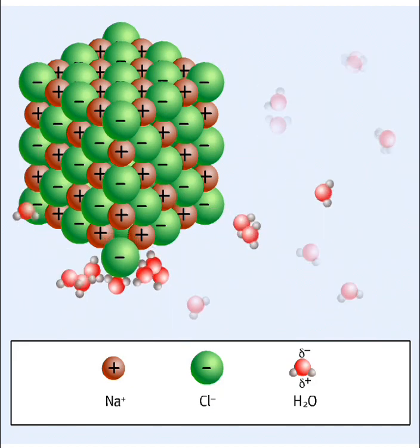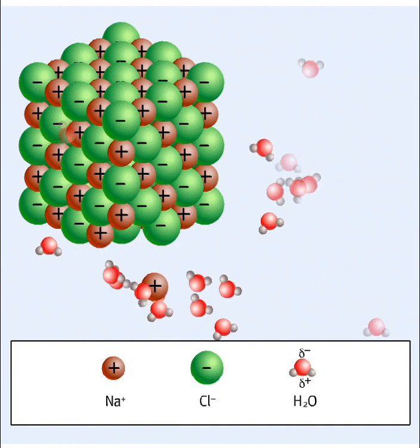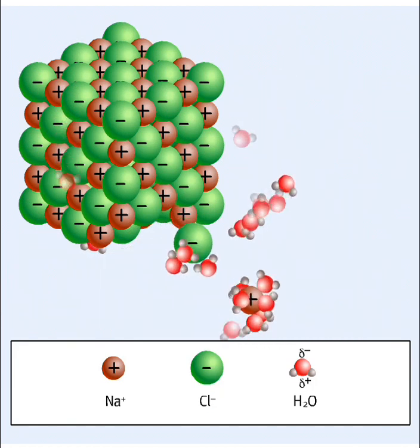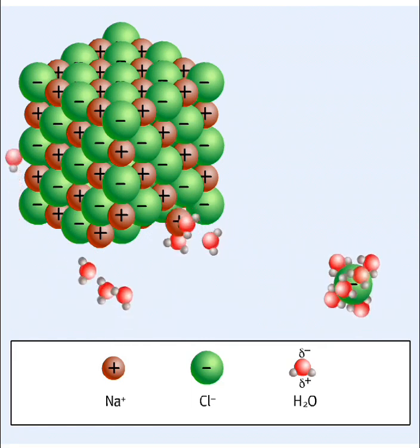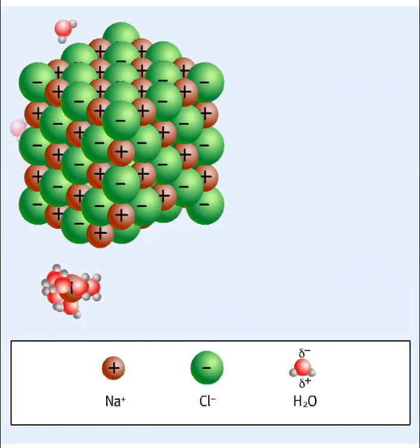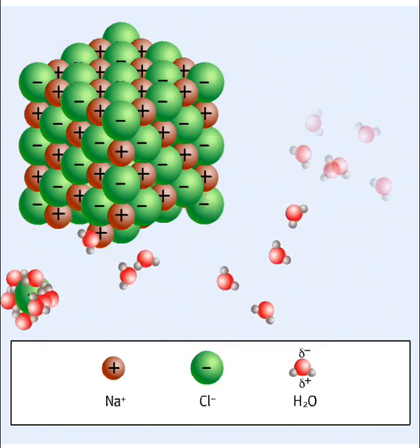Polar water molecules interact with the positive and negative ions of the salt. The positive ends of the water molecules are attracted to the negative chloride ions. The negative ends of the water molecules are attracted to the positive sodium ions. This interaction between water and the salt ions causes the salt to break apart or dissolve in water.